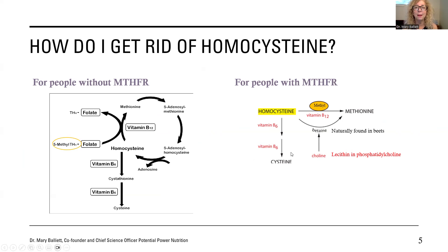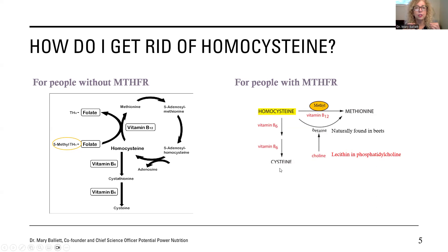I also want to not get B6 deficient in order to get rid of homocysteine — which causes cardiovascular disease, cancer, arthritis, diabetes, and osteoporosis. Vitamin B6 can become deficient from drug-induced nutrient depletion if I'm on birth control pills, hormone replacement therapy, if I'm drinking a lot of coffee and tea or taking diuretics, or if I'm on antibiotics. So I want to make sure I have extra B6 so that I can convert homocysteine to cysteine, a critically important amino acid needed to make things like insulin and the antioxidants glutathione and taurine.